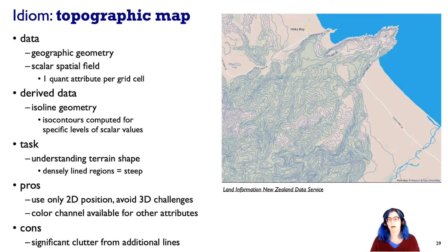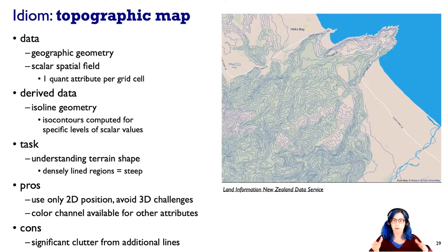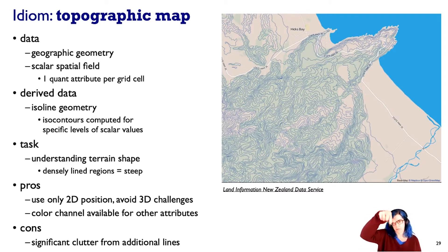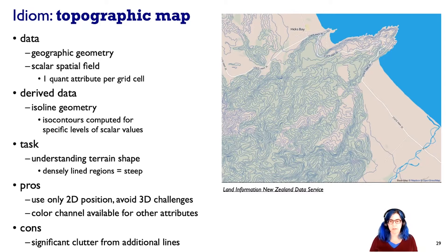We can see something about the terrain just from this two-dimensional view. If there are a bunch of contour lines close together, that means it's a really steep slope. Without using a three-dimensional rendering directly, we're able to read off some of that structure — we can get a sense of where we've got the top of a mountain with a bunch of smaller and smaller isocontours. So we avoid some of the challenges of 3D that we talk about in the segment on rules of thumb.